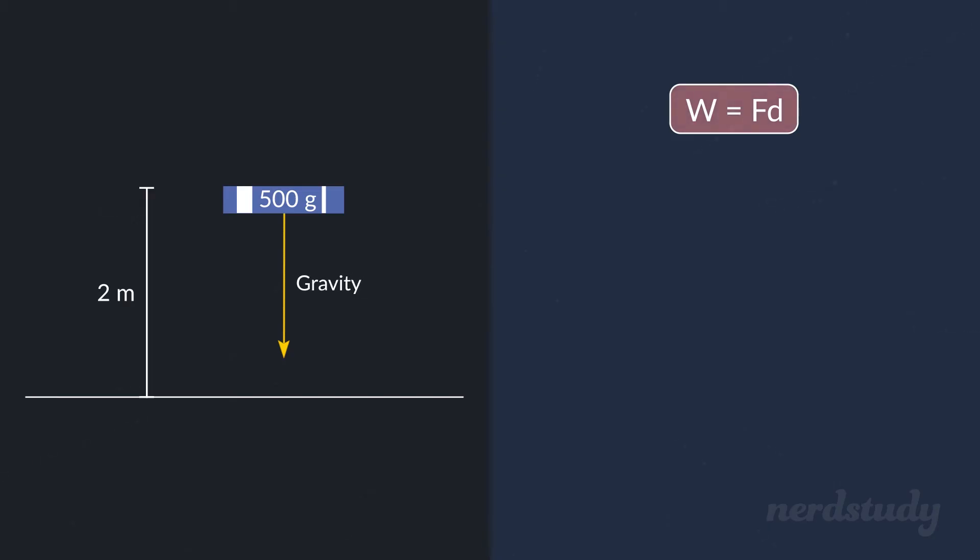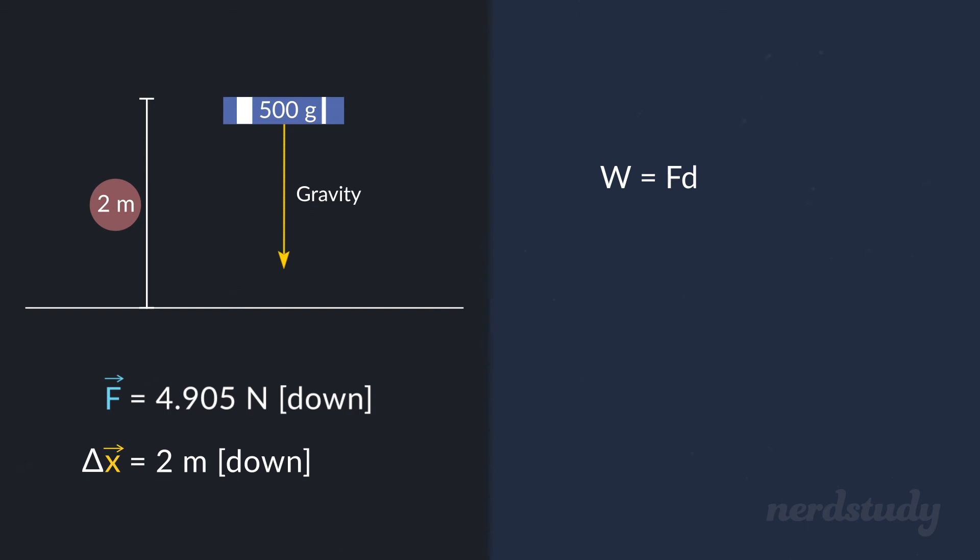Now we have to figure out the force of gravity on the book. We can use Newton's second law for that. The mass of the book is half a kilogram, and the gravitational acceleration is 9.81 meters per second squared. So plugging those values into Newton's second law gives us the force on the book as 4.905 newtons downward. Great! And what about the displacement? Well, the book was originally 2 meters above the floor, so the displacement is 2 meters downward. Great! Now that we have this information, we can substitute them into the equation. So we multiply the magnitude of the force by the magnitude of the displacement, and we get 9.81 newton meters. And that's the amount of work done by the force of gravity.